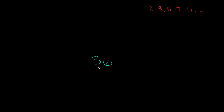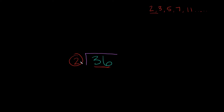Let's say we were asked to find the prime factors of 36. This is our composite number, so all we're going to do is draw a step on it. Now ask yourself: what is the smallest prime number that divides evenly into 36? Out of all the prime numbers, the smallest one that fits into 36 is 2, because 36 is an even number and 2 fits into all even numbers. So we put a 2 on the outside and circle it. How many times does 2 fit into 36? That would be 18 times, so we write 18 on top.